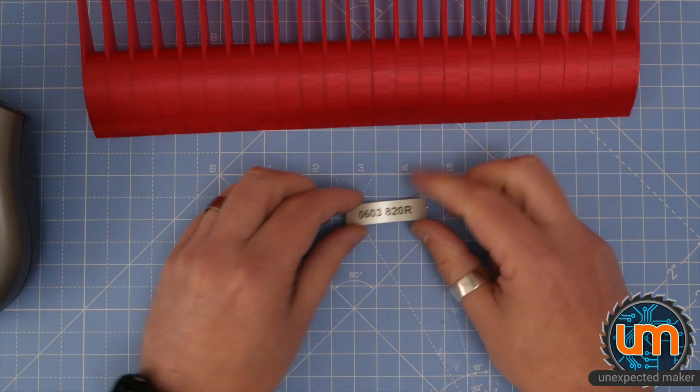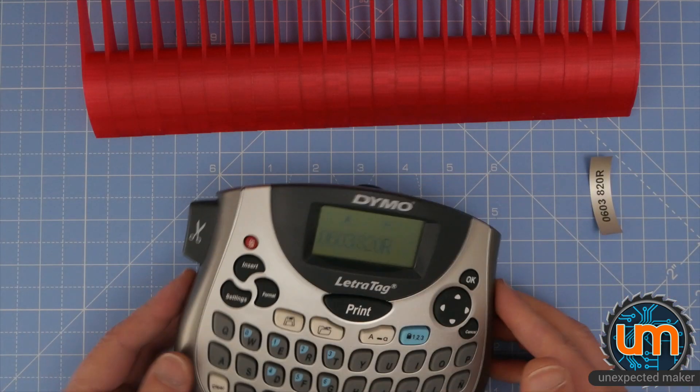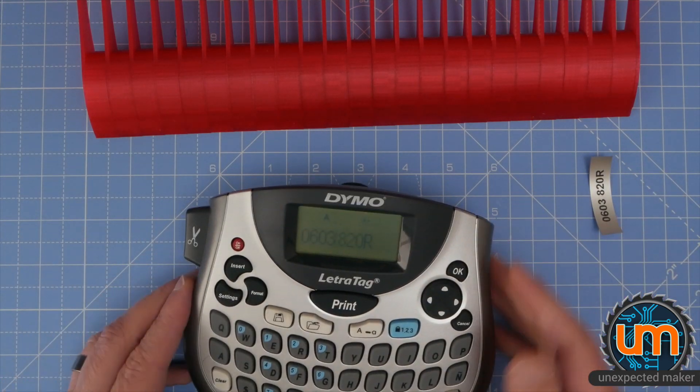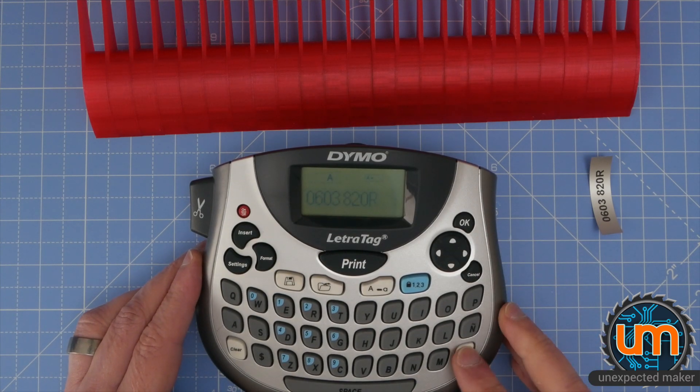Cut it off. And as you can see, I've now got a label, 0603 820R, and I'll just do one more so I can put two of them on next to each other, just to show you what they look like.